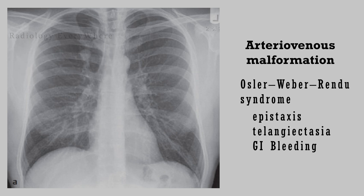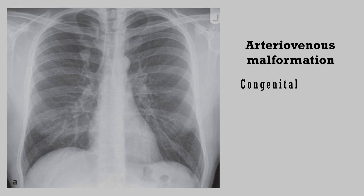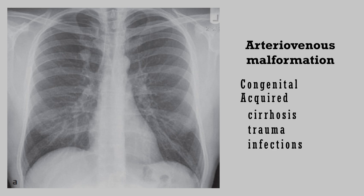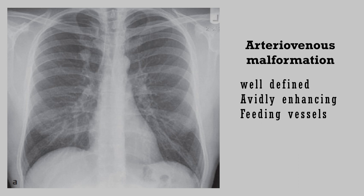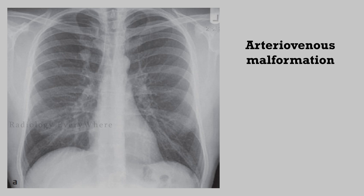which is characterized by epistaxis, telangiectasia of skin and mucous membranes, and GI bleeding. AV malformations are usually congenital but can be acquired in cases of cirrhosis, trauma, and certain types of infections. Radiographically, these are well-defined, avidly enhancing nodules or masses with an enlarged feeding artery and draining vein.